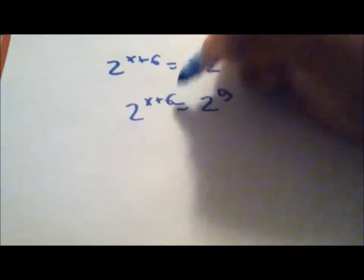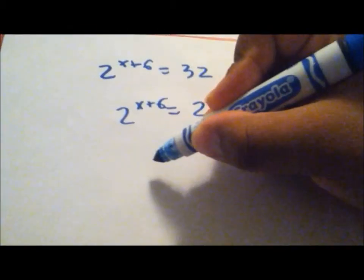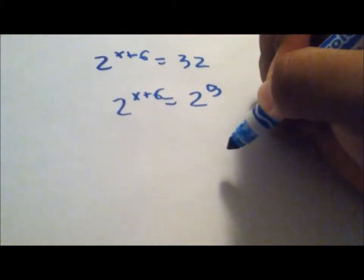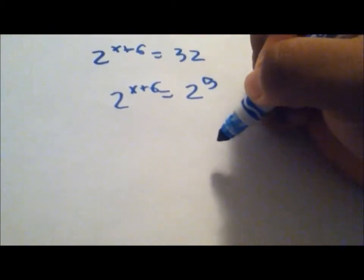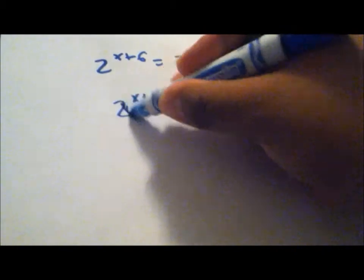Now since we have the same bases, we can solve. Since 2 to the x plus 6th power and 2 to the 5th power are the same bases, we can cross them out for now.